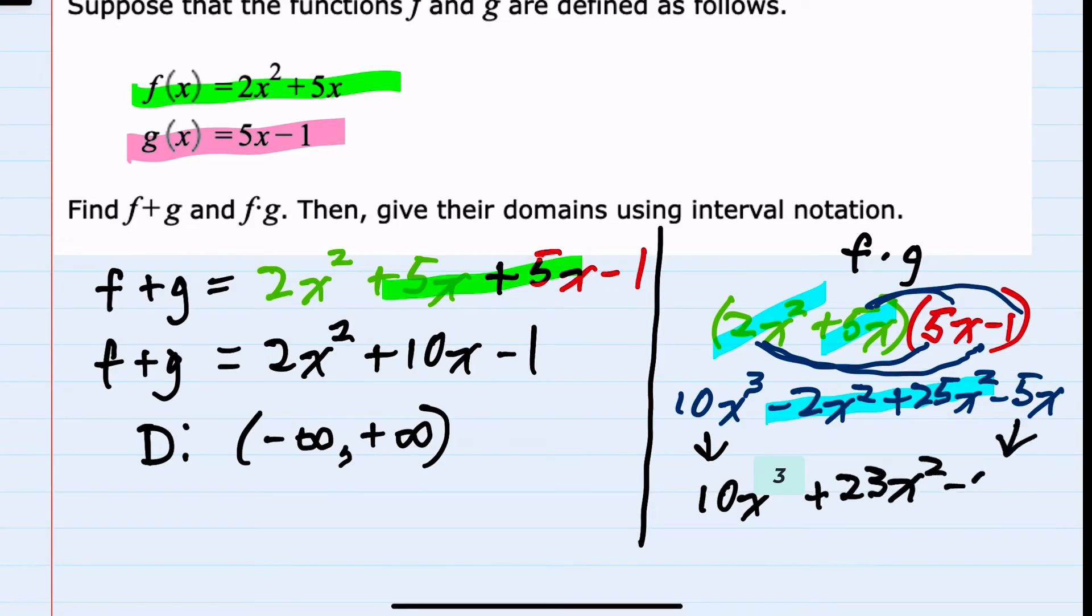Bringing down the minus 5x, since there are no like terms there, we have our simplified f times g function. And again, for the domain, there are no square roots or denominators that would limit the domain, so we would have negative infinity to positive infinity.